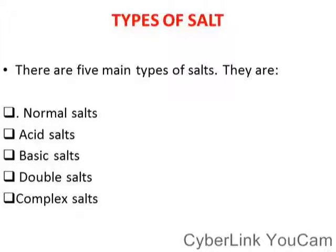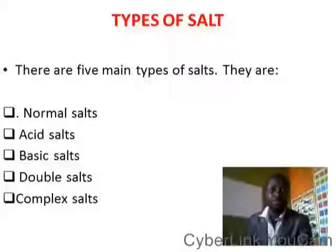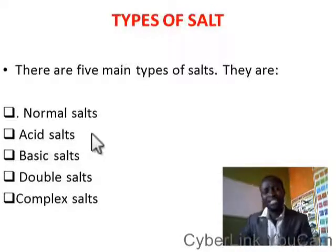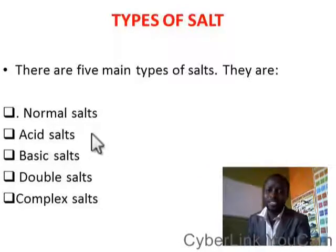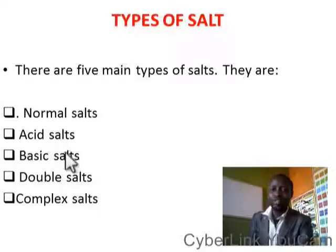Now we shall move on to what we call types of salt. We are now under salt. Sometimes when salt is mentioned, people think it is the salt we eat at home — it's not always true. That is why I shall be telling you the five different types of salt. Number one is normal salt — that's the common salt. Number two: acid salt. Number three: basic salt. Number four: double salt. And number five: complex salt.